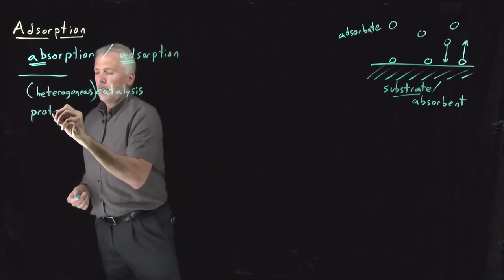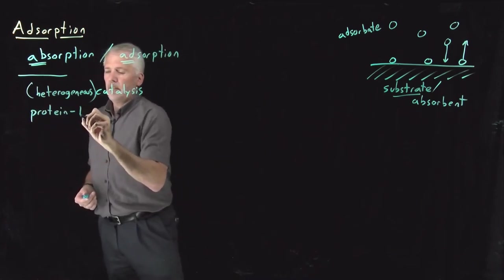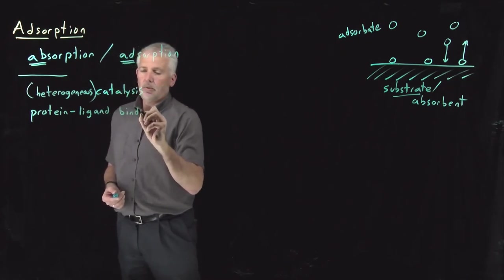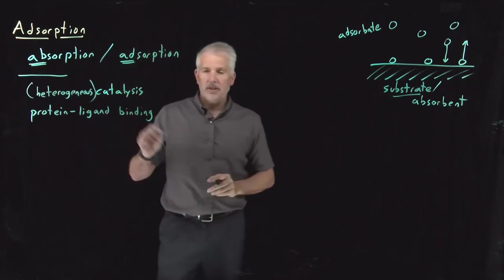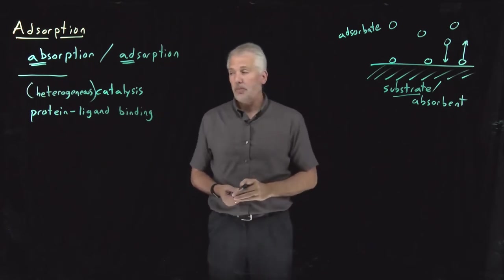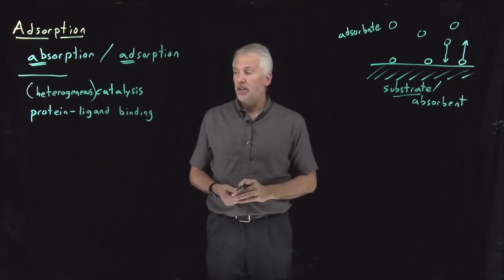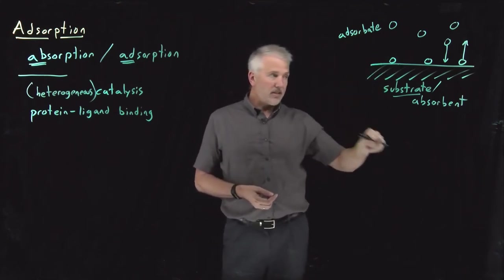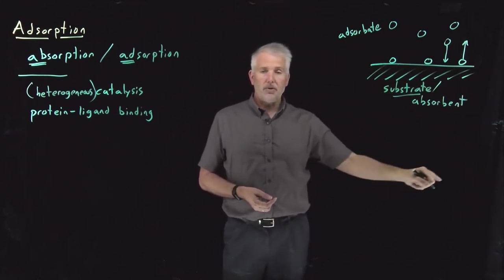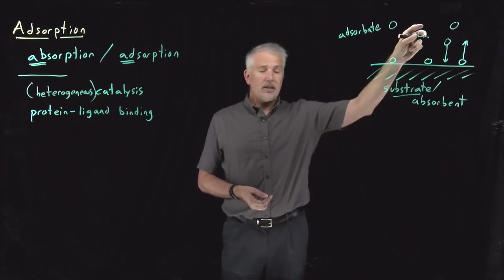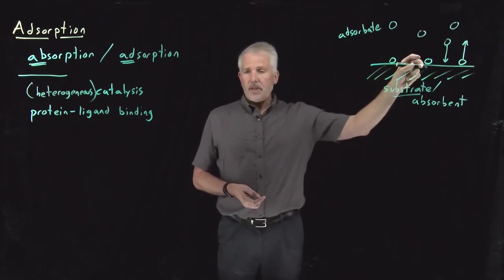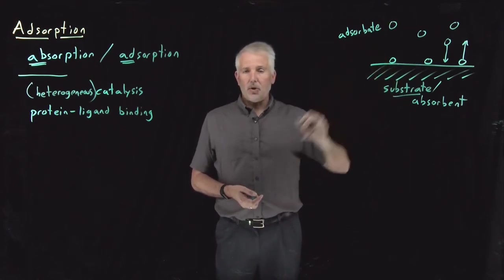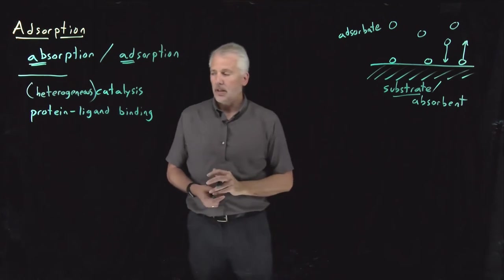It's also typically very important for all sorts of protein-ligand binding, which might be another form of catalysis. If enzymatic catalysis is taking place — if an enzyme is catalyzing a chemical reaction — then some ligand molecule is going to bind to the enzyme. In this case, the substrate is some large protein molecule, some enzyme. The ligand binds to the active site of the protein, the catalyzed chemical reaction takes place, and then it desorbs or unbinds from the protein.